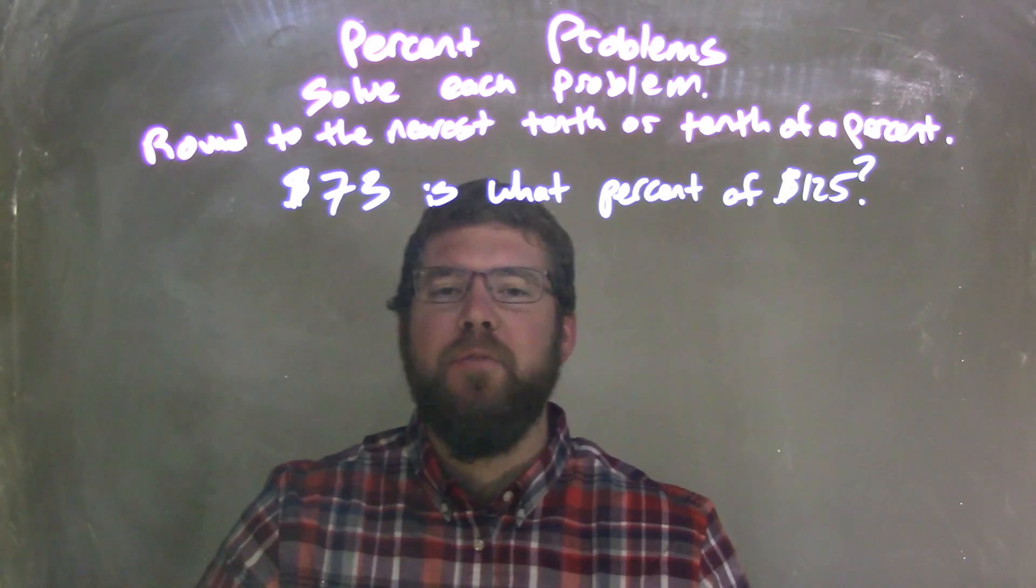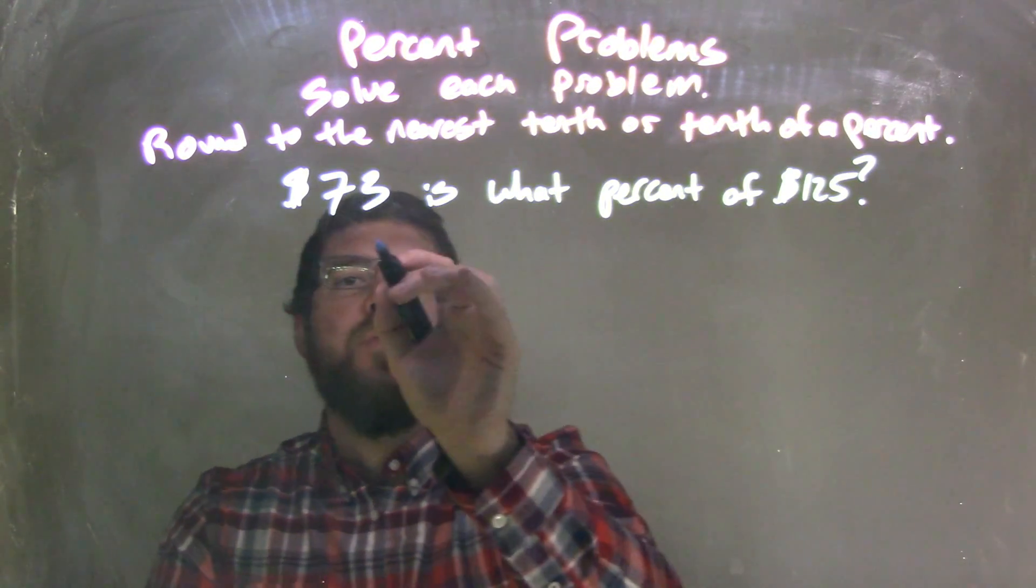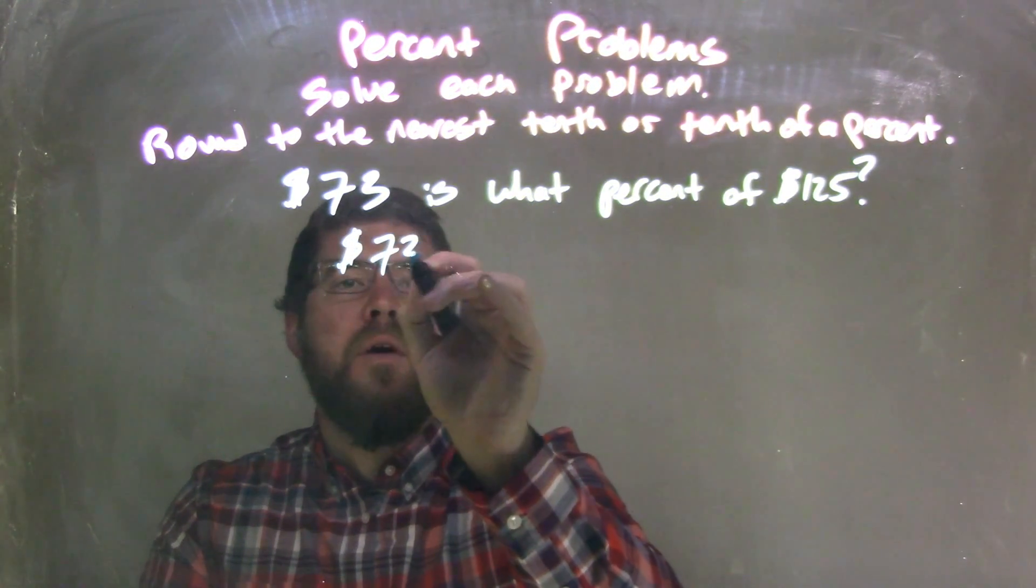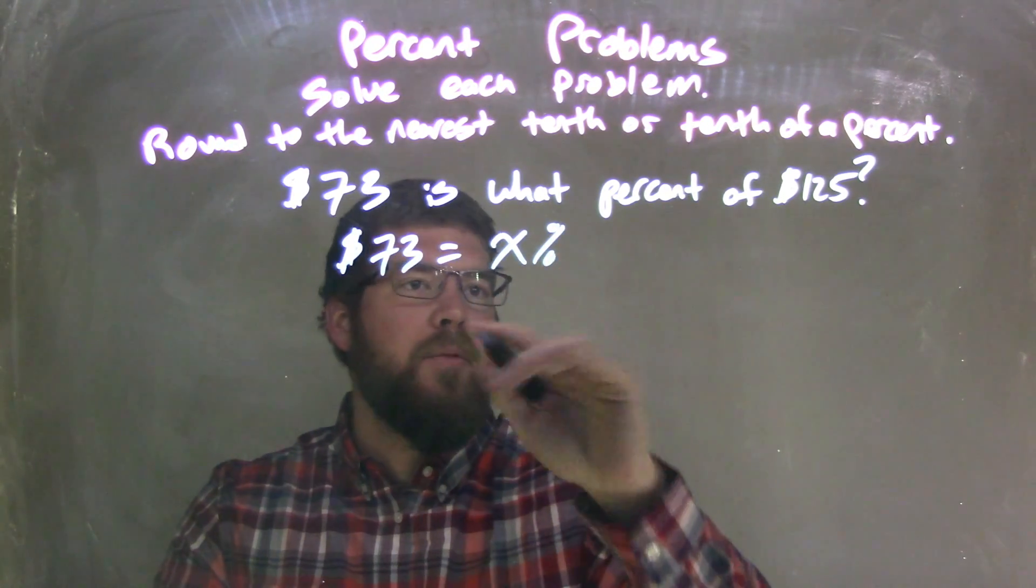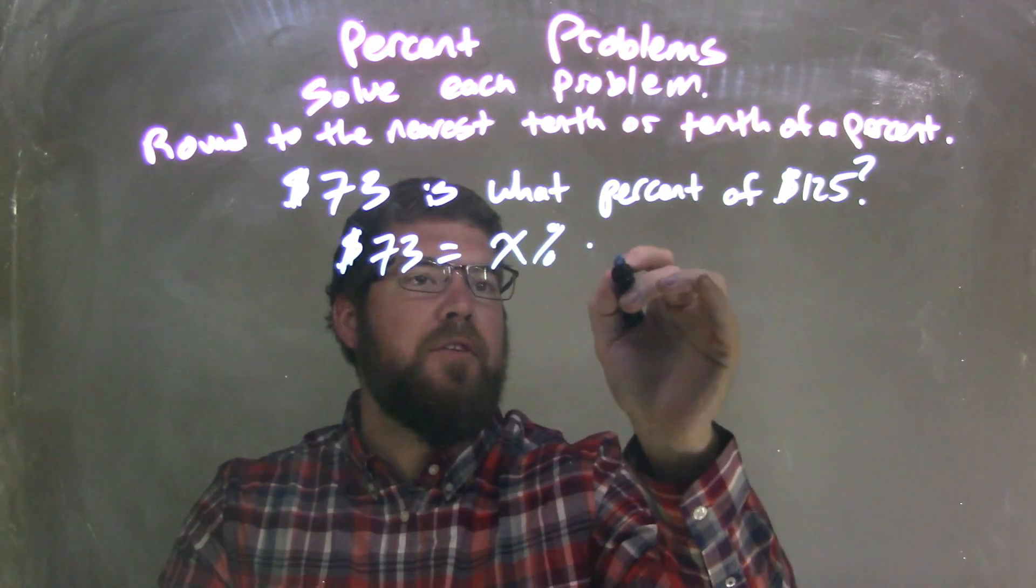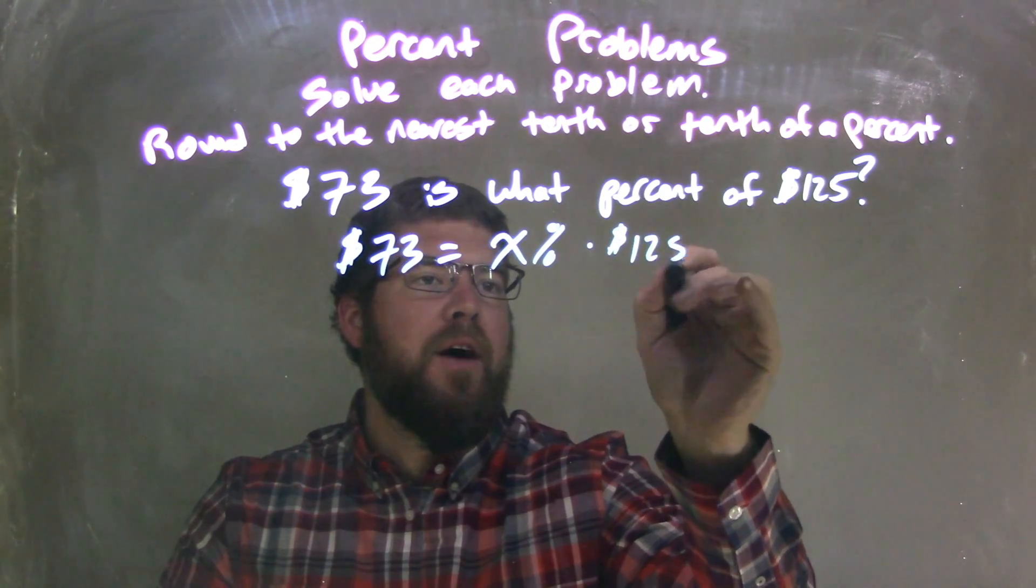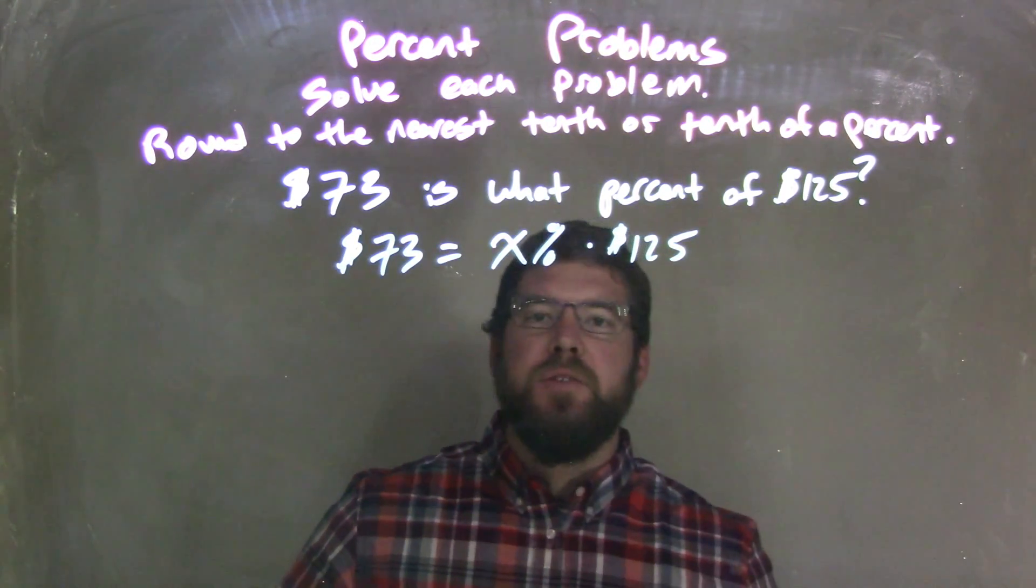Let's see if we can make an equation out of this. $73 equals x percent times $125. So now let's go solve that.